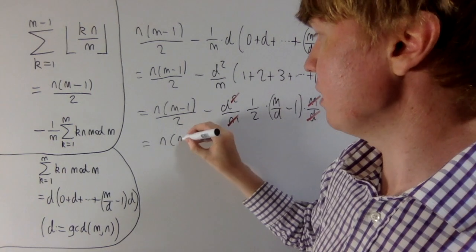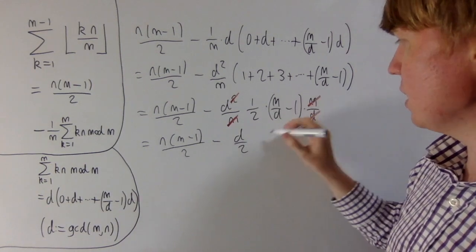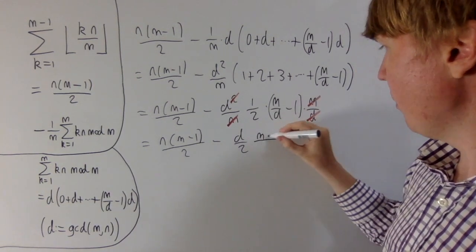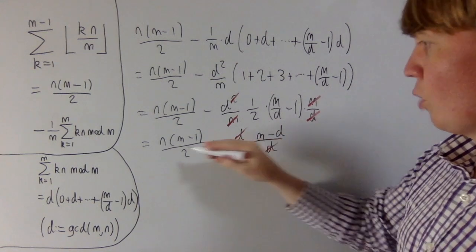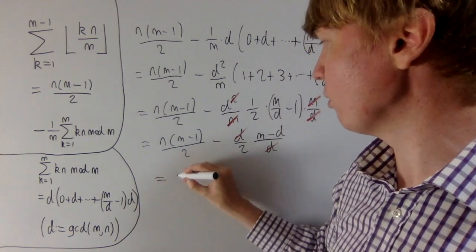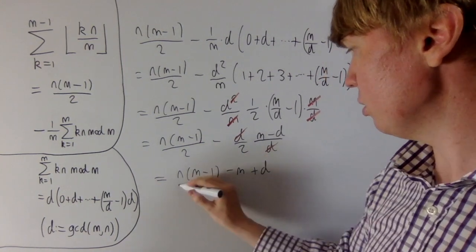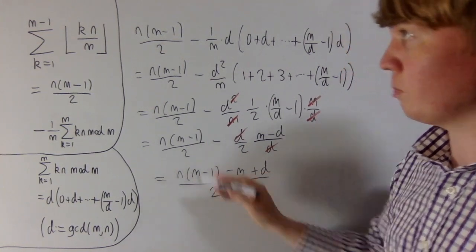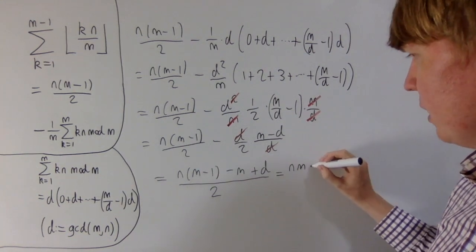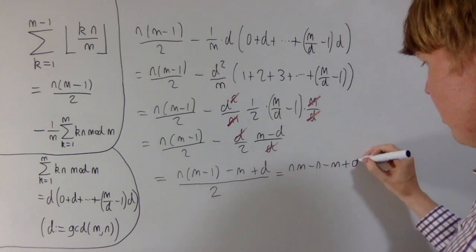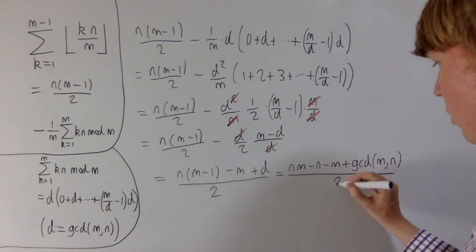Then we can tidy this up a little bit further. We should get a nice expression in the end. So n into m minus 1 over 2, then it's minus d over 2. And if we write m over d minus 1 as m minus d over d, these two d's cancel as well, giving us a nice expression where everything can be put over the same denominator of 2. So we get n into m minus 1 minus m plus d, all of this over 2. We'll expand the brackets. We get n, m minus n minus m plus the greatest common divisor of m and n, all of this divided by 2 gives us our final answer.